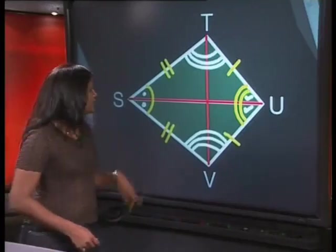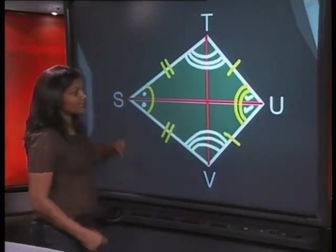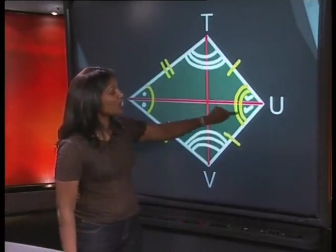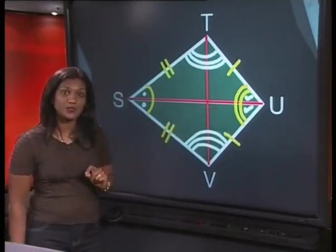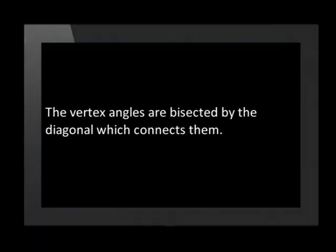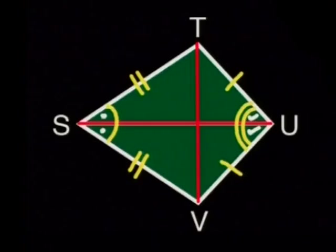Look at all the equal parts that we have shown on our kite. We know that these two angles are equal here at S. And at U, we know that these two angles are equal. Now, how can we state this in mathematical language? We can say that the vertex angles are bisected by the diagonal which connects them, which is SU in this case.